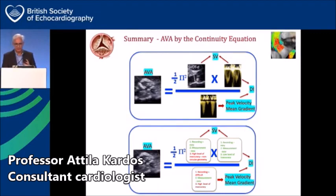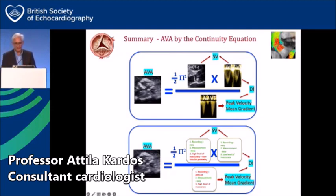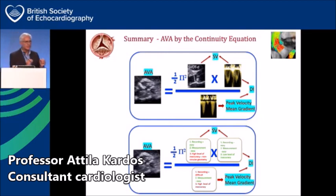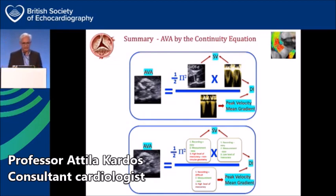This also highlights how complex and powerful the effective orifice area of the aortic valve by continuity equation is, since it incorporates peak velocity, mean gradient, dimensionless index (velocity ratio), and stroke volume all in one. If we measure all these parameters properly with minimal error, we have a hugely powerful value in effective orifice area for daily practice — applicable in patients with preserved ejection fraction.